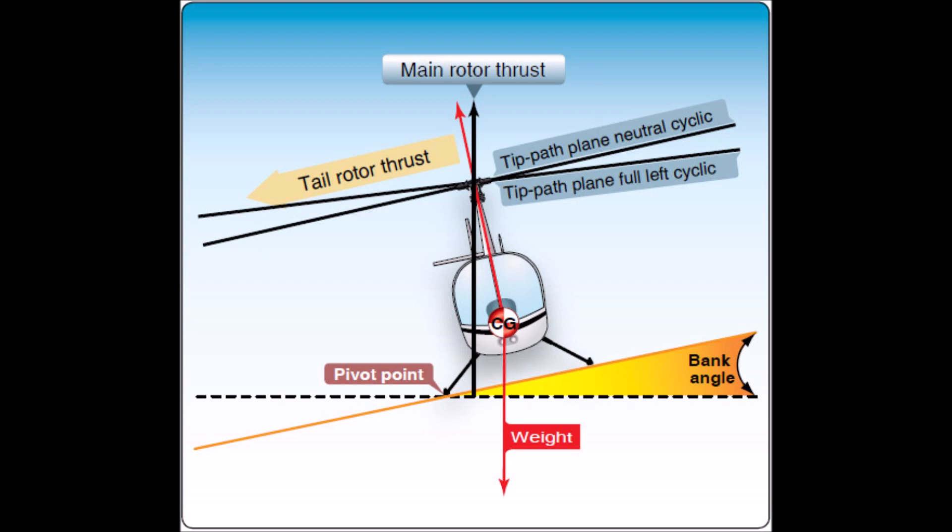Dynamic rollover begins when the helicopter starts to pivot laterally around its skid or wheel. For dynamic rollover to occur, the following three factors must be present.